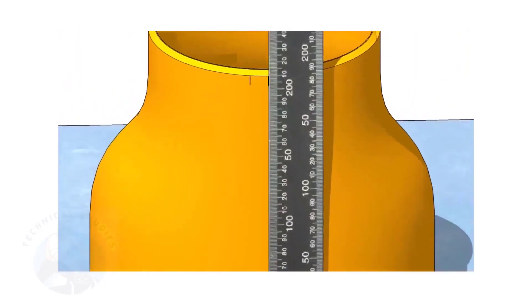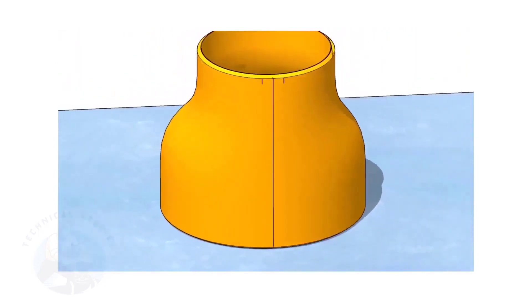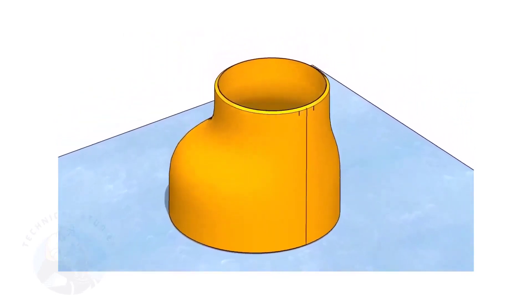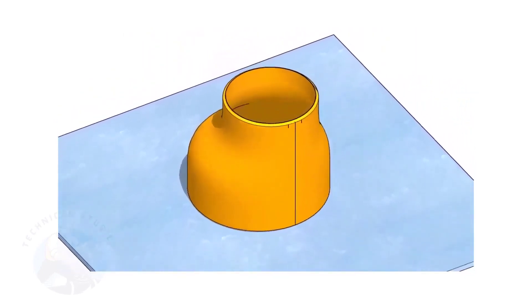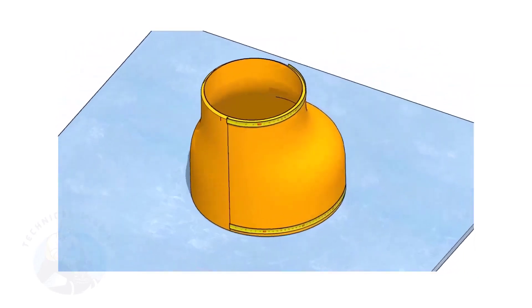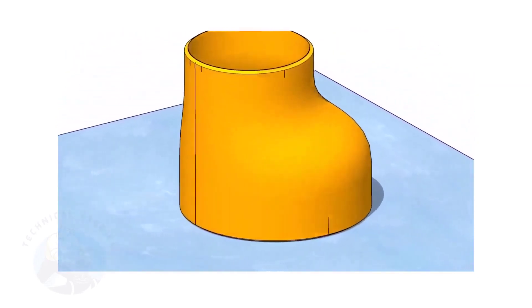In this video, I will show you the method of fitting an eccentric reducer to a pipe that is already fitted to a flange. But this method is applicable for all fittings. Remember, the sequence of the fit up is more important.